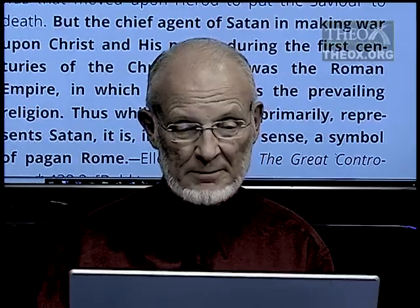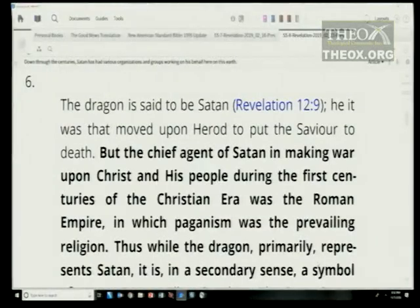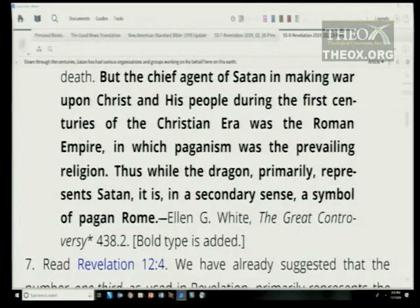Down through the centuries, Satan has had various organizations and groups working on his behalf. From Ellen White's Great Controversy, page 438: 'The dragon is said to be Satan (Revelation 12:9). He it was that moved upon Herod to put the Savior to death. But the chief agent of Satan in making war upon Christ and his people during the first centuries of the Christian era was the Roman Empire. Thus, while the dragon primarily represents Satan, it is in a secondary sense a symbol of pagan Rome.'